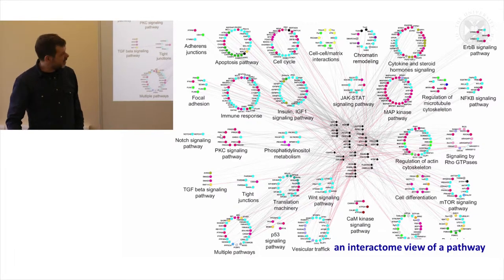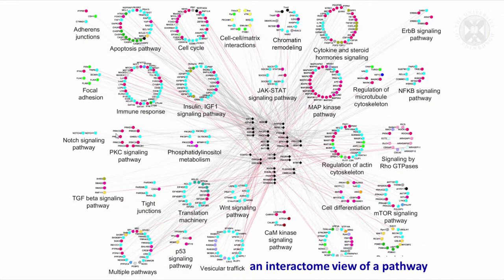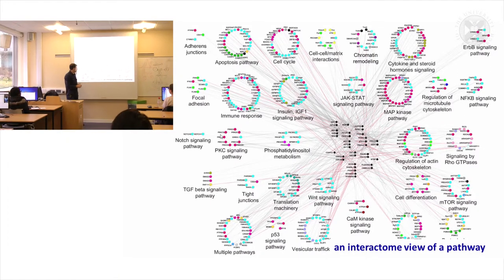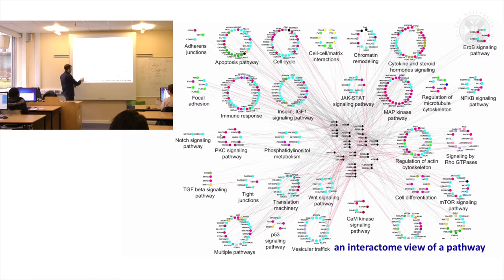There is this view of a pathway. Quite often what we do, as we saw yesterday, is start with a data set. We look at that data and say these genes are interesting. Using transcriptomics or other approaches, it's quite easy nowadays to get a list of genes which are interesting or potentially interesting to you. But of course what it is is just a list of genes.